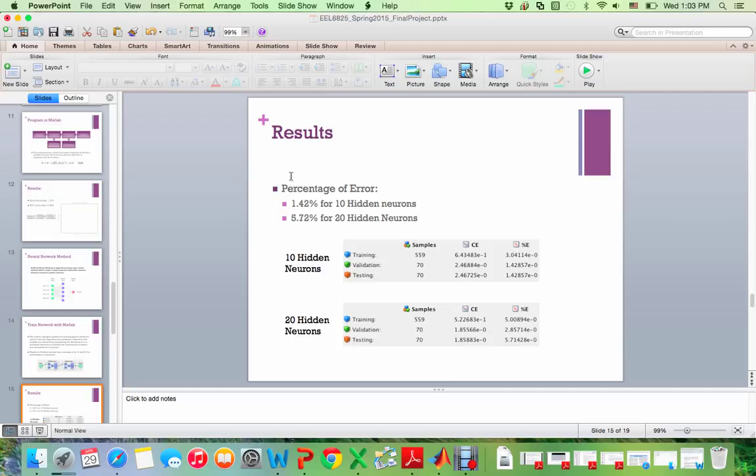So results. We just simply look at the percentage of errors. For 10 hidden neurons, it actually reached a low of 1.42% of errors. And the 20 has a significant higher amount of errors, 5.7%. So we can tell from here that the neural network really depends on how much hidden layers you define. And we can see that for the 20 hidden neurons, probably the layers are too much for this particular application. Because if we have too much of the hidden layers, it actually would require a lot more data to train those layers. And if there's not enough, then the correlation would not be trained well.